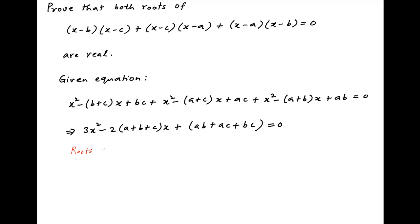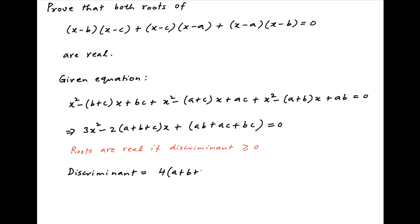The roots of this quadratic equation are real if the discriminant is greater than or equal to 0. The discriminant is equal to 4 times (a plus b plus c) whole squared minus 4 times 3 times (ab plus ac plus bc).